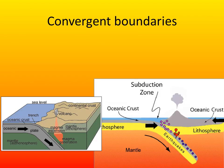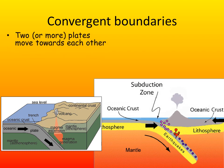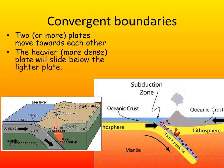Convergent boundaries have three subgroups, but all convergent boundaries have two or sometimes more plates moving towards each other. The heavier or more dense plate will often slide below the lighter plate. This causes friction which heats the plates to extraordinary temperatures, causing melting. This melting is known as subduction.